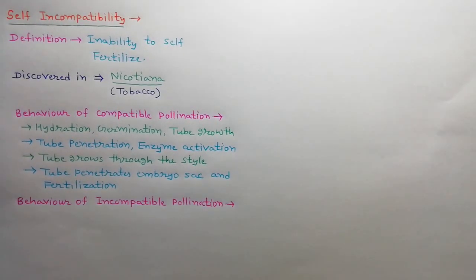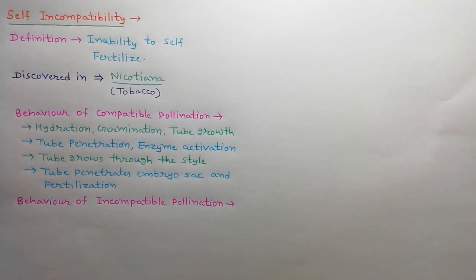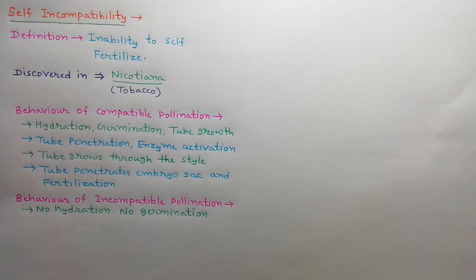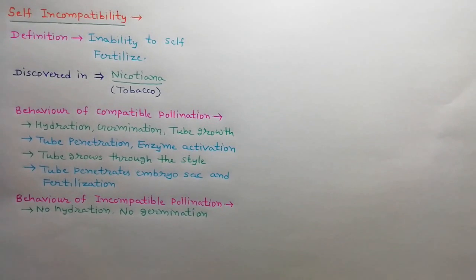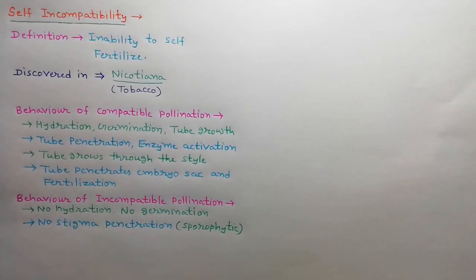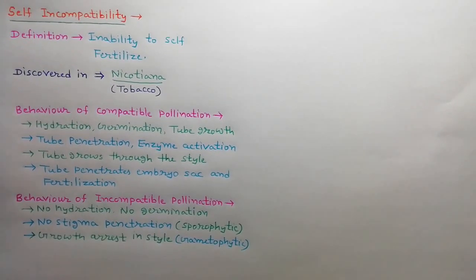Behavior of incompatible pollination is just opposite to compatible pollination. If an incompatible pollen grain pollinates the stigma, it shows retardation in growth at any of the four stages, resulting in failure of self-pollination. In the first stage, the pollen grain touches down on the stigma but no hydration or germination occurs — the foreign pollen is not recognized by the stigma. There is no stigma penetration; this is called sporophytic incompatibility. Pollen tube growth arrested in the style is called gametophytic incompatibility. The fourth stage is failure of male gametes to reach the egg.